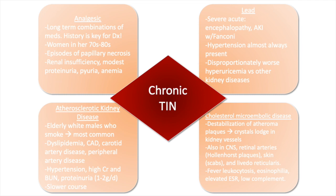Atherosclerotic kidney disease usually presents with hypertension, azotemia, and proteinuria in the nephritic range. Cholesterol microembolic disease is due to destabilization of atheroma plaques with subsequent cholesterol crystals lodging in kidney vessels. These crystals also wreak havoc in the CNS, retinal arteries in the form of Hollenhorst plaques, skin in the form of scabs, and livedo reticularis. It is usually accompanied by systemic signs such as fever, leukocytosis, eosinophilia, elevated ESR, and low complement.